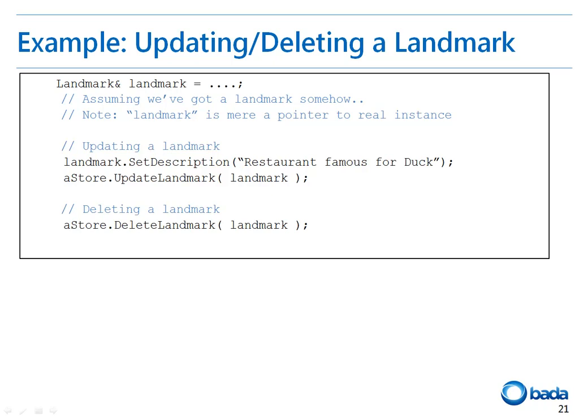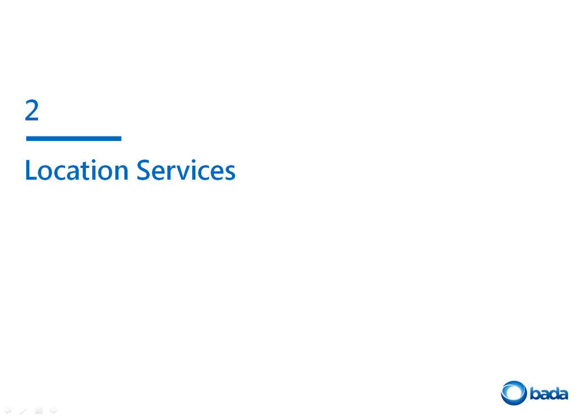Now that we have seen how to create and search for landmarks, let's look at how to remove or update a landmark. In this example, I am going to try and update the description of the landmark. I have first retrieved the landmark instance, then updated the description using the SetDescription API. Then I called the UpdateLandmark API of the landmark store with the landmark as the parameter. The landmark can be deleted from a landmark store using the DeleteLandmark API with the landmark.